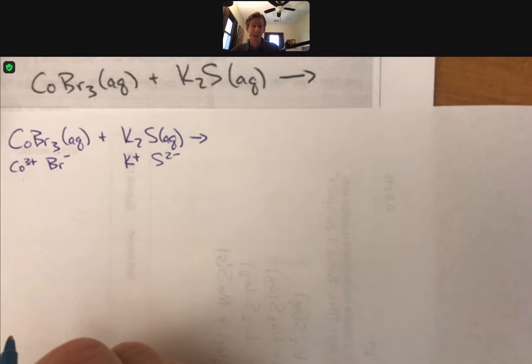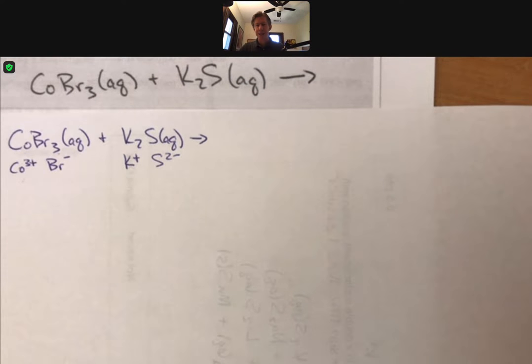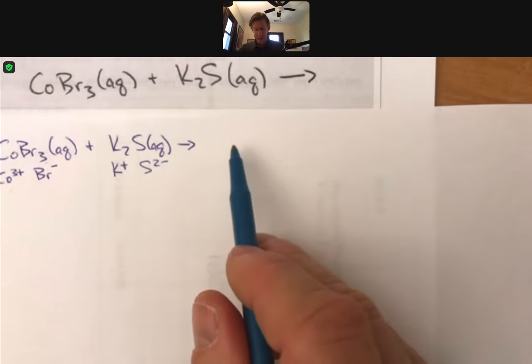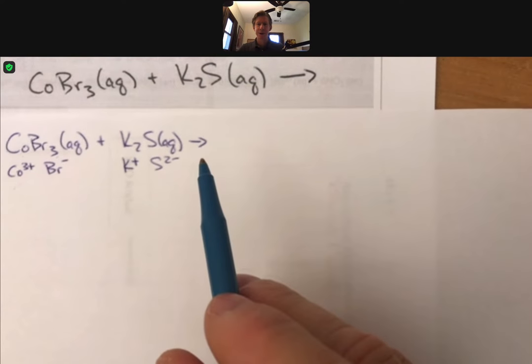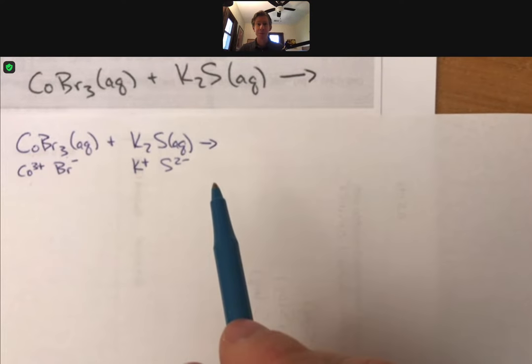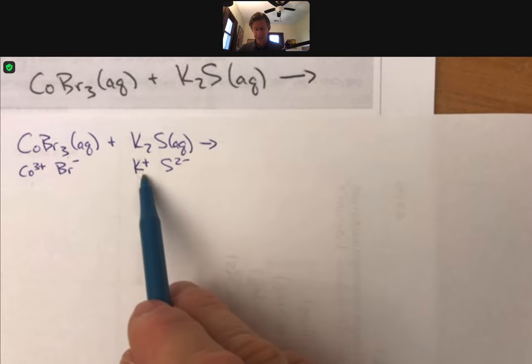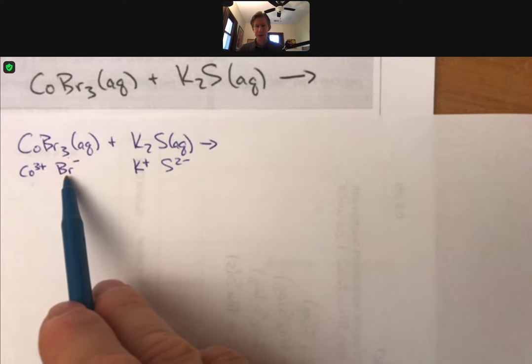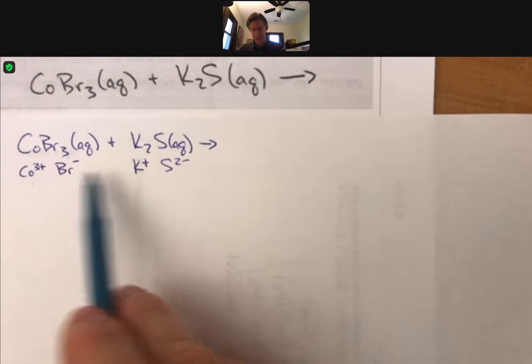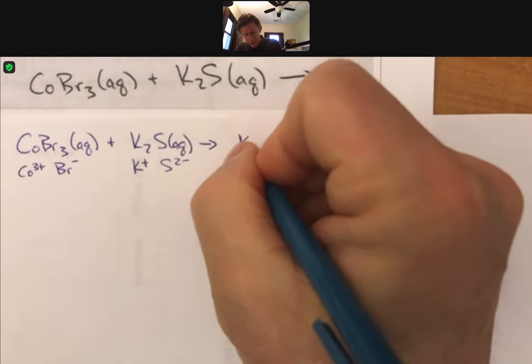And now we put these together to make balanced compounds, meaning that whatever we write over on this side, the pluses and the minuses within the compounds have to cancel out. So since one of them is going to take the K, the positive cation here, and the anion, the bromide, and since that's a plus one minus one, we've got just KBr.